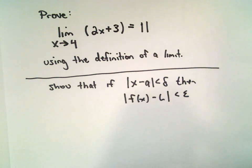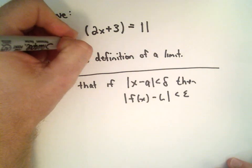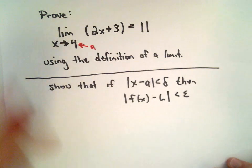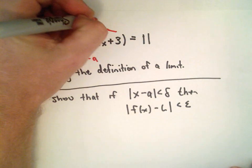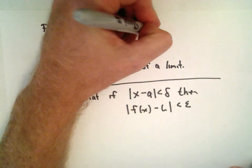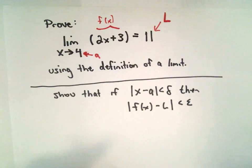So again to remind you, in this case my a value is 4. The 2x plus 3, that's my function f of x, and the number that we're claiming to be the limit, that is 11, that's our L value.